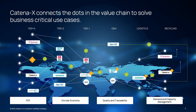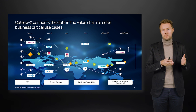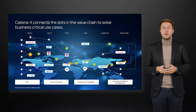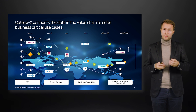But what keeps us together in the automotive industry? It is parts, components, materials and vehicles which are processed over many tier levels. And those parts are also the basis for the use cases mentioned: calculating the product carbon footprint, improving product quality, or providing a product path for a specific component.